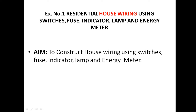Residential house wiring using switches, fuses, indicator, lamp and energy meter — these are all the accessories. The aim of the experiment is to construct house wiring using switches, fuse, indicator, lamp and energy meter. Before entering into this experiment, we are going to see a small clipping which shows how power is entering into our home from the nearby pole to our service entrance.